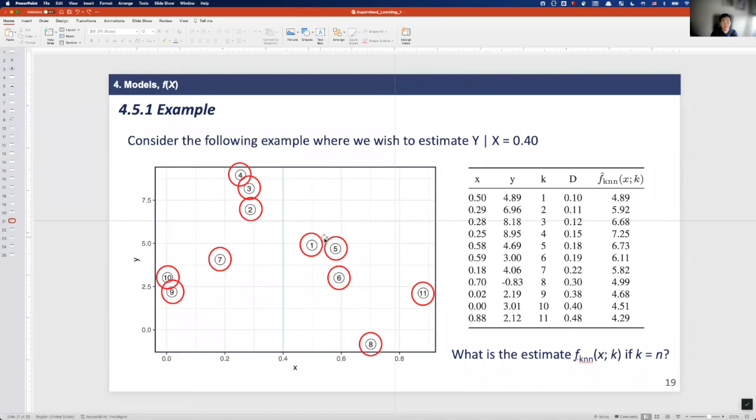Here if k is 1, it means you use the nearest point to number 1 here, and if k is 2, you average the y value of these two points, and so on. So if k is N, it means you use the average of our observed y value for the predicted value 0.4.